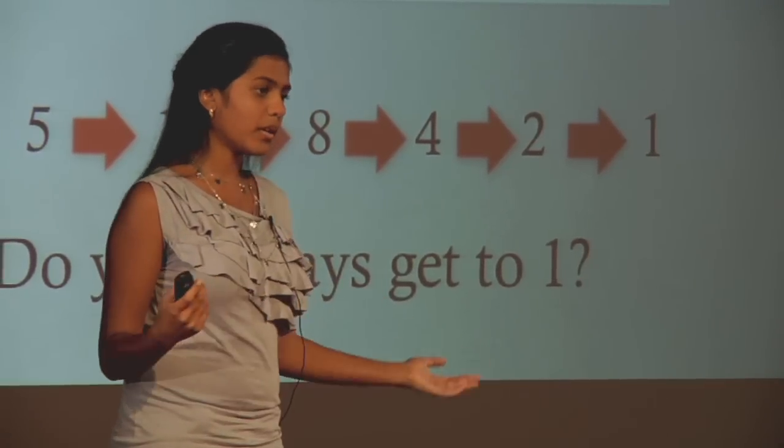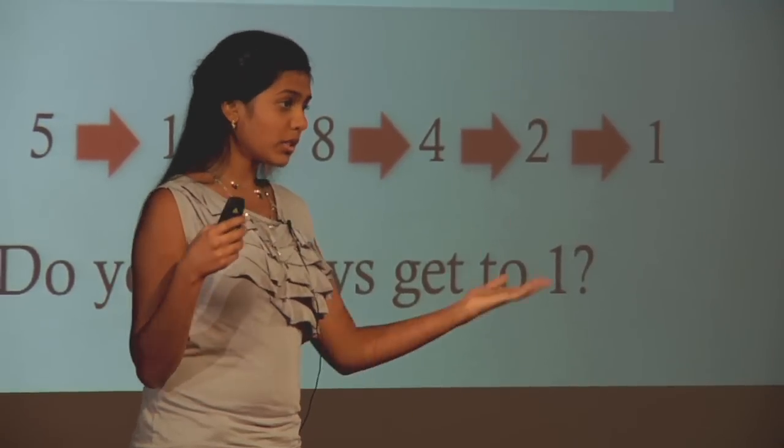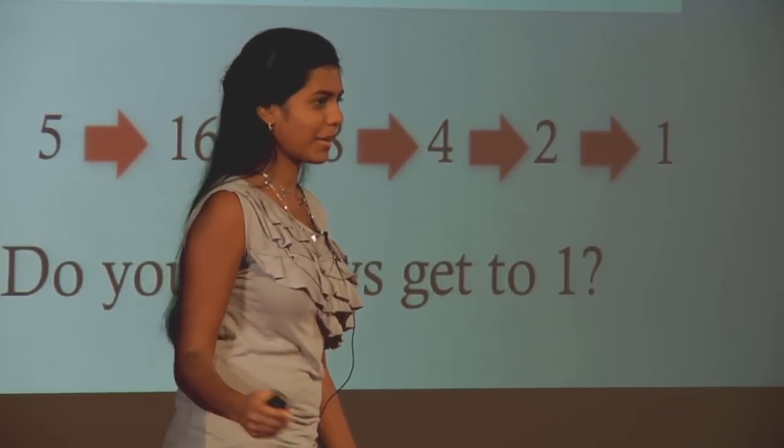The conjecture is that you always eventually end up with one. Now, as a four-year-old, I started playing around with different numbers. And when you're four years old, it's called play, and when you're a mathematician, it's called work. Math can be a lot like playing around sometimes.